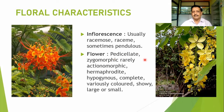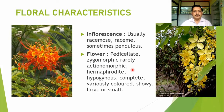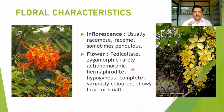Flowers are mostly pedicellate, having a short stalk-like structure at the base. They are zygomorphic because one of the petals is mostly larger than the others. Rarely actinomorphic. They are bisexual, where androecium and gynoecium belong to the same flower — hence bisexual or hermaphrodite. The ovary is at the superior position, so it is a hypogynous flower. It is a complete flower with calyx, corolla, androecium, and gynoecium — all four whorls present. Petals are variously colored and large or small.